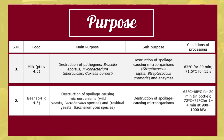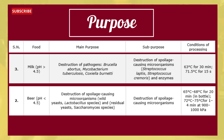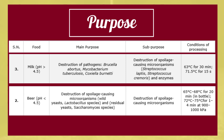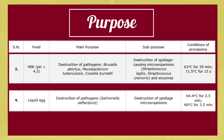The third product is milk. The main purpose is to destroy pathogens like Brucella, Mycobacterium tuberculosis, and Coxiella burnetii. It also destroys microorganisms such as Streptococcus lactis and Streptococcus cremoris, and enzymes. Conditions for processing are 63°C for 30 minutes or 71.5°C for 15 seconds.